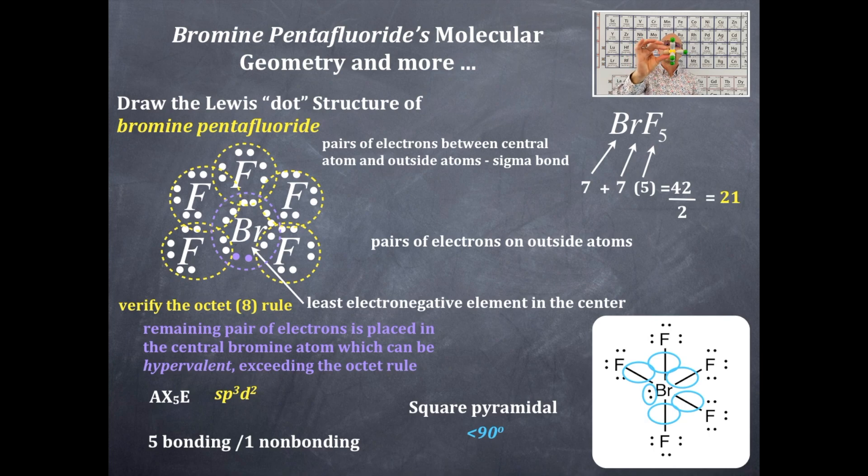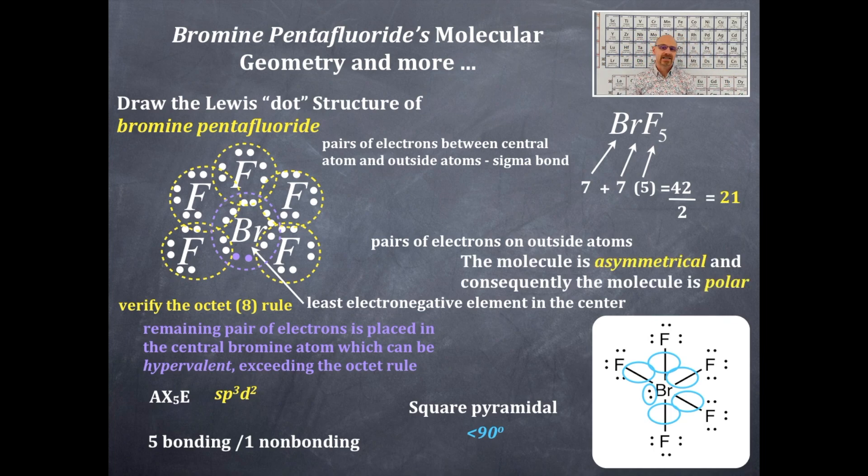Because you've got that central domain, you have a lone pair on the central region that's asymmetric to this other side. So this is always polar. I'm writing that down. It's always polar.